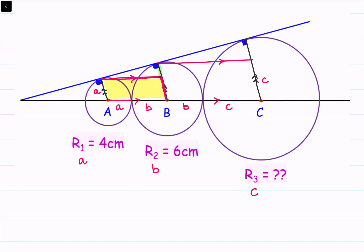So instead of b, this length is a and the remaining length on top is b minus a. Similarly, for the next figure, opposite sides are also parallel, making it a parallelogram. This length is b and the length on top is c minus b. Now let's look at the triangles — specifically the yellow triangle and the green triangle. Also note that BC equals b plus c.